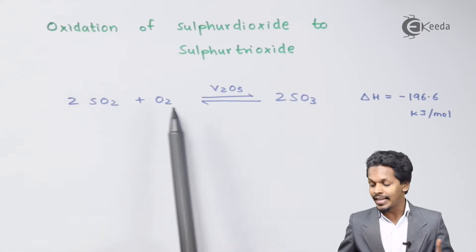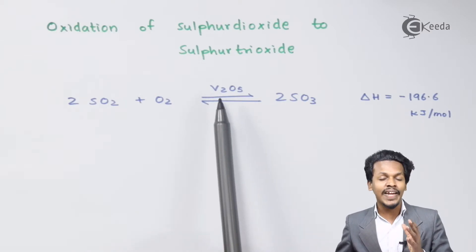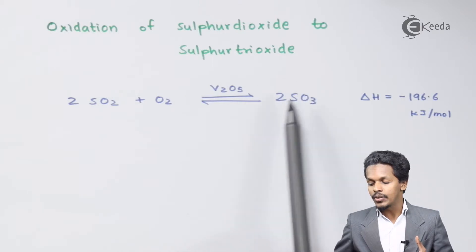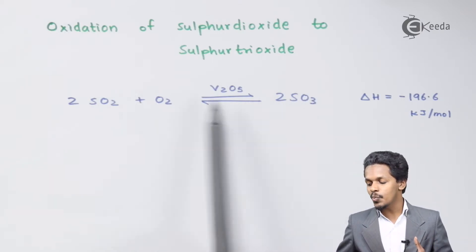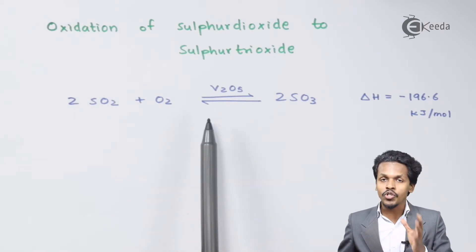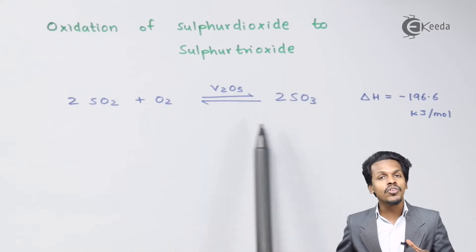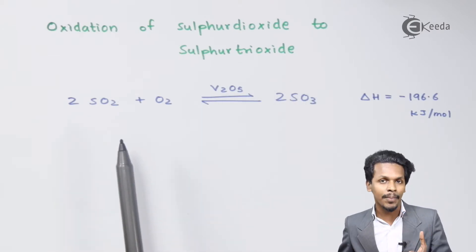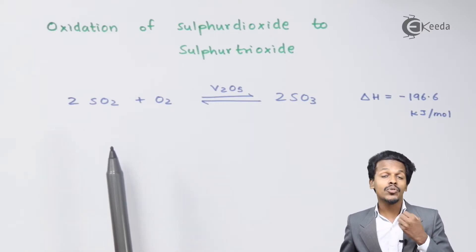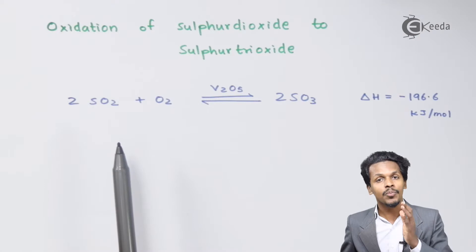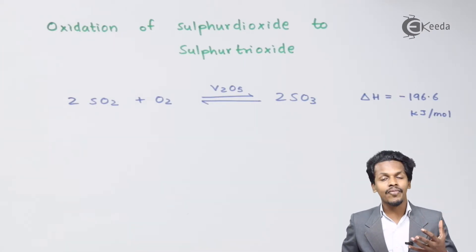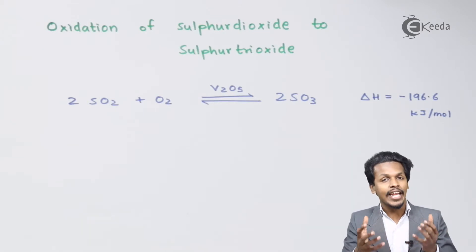The SO₂ obtained from step 1 will be further reacted with Oxygen in the presence of a catalyst, V₂O₅. This process is very much reversible, so a particular temperature must be maintained to obtain 2 moles of SO₃. That temperature is known as the optimum temperature, which is 723 Kelvin. Regarding pressure, a higher pressure of 2 to 3 atmospheric pressure is applied, which reduces the volume and converts the gas into a liquid state.